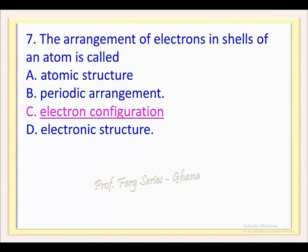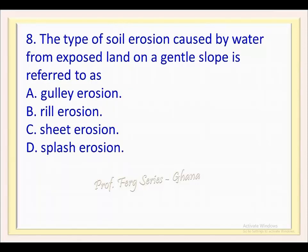Question 8. The type of soil erosion caused by water from exposed land on a gentle slope is referred to as: a. Gully erosion, b. Rill erosion, c. Sheet erosion, d. Splash erosion. The correct answer is c.